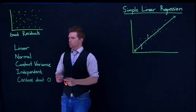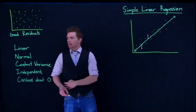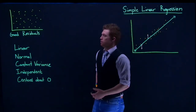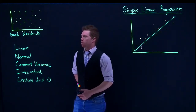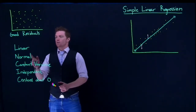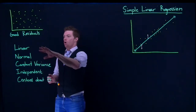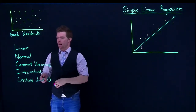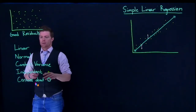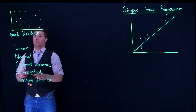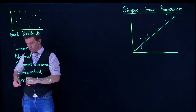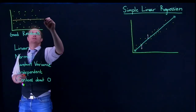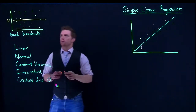We're going to go through step by step on each of these to see what it looks like if we break these rules or invalidate our residuals. All of these have to be true of our residual plot. Right now this residual plot is considered linear, normal, has constant variance, has no dependence problems, and is centered about zero — we have this zero line going through the middle.